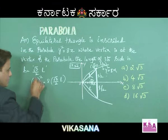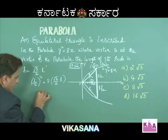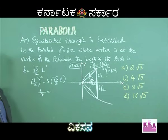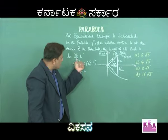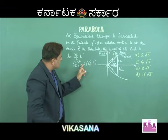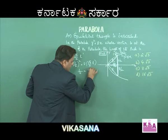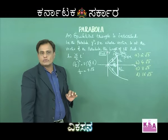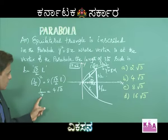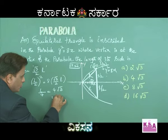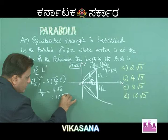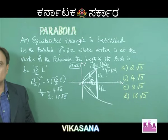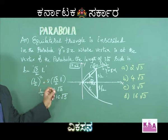So (L/2)² = 8 × (√3/2)L. Simplifying: L²/4 = 4√3 L. One L cancels, giving L/4 = 4√3. By cross multiplication, L = 16√3. The length of the equilateral triangle is 16√3.